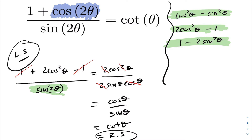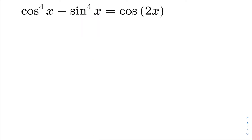In this question, we again started with the left hand side, used trig identities and properties we had, and ended up getting the right hand side — so this trig identity is proven. The next example: we want to show that cos⁴x minus sin⁴x equals cos 2x.